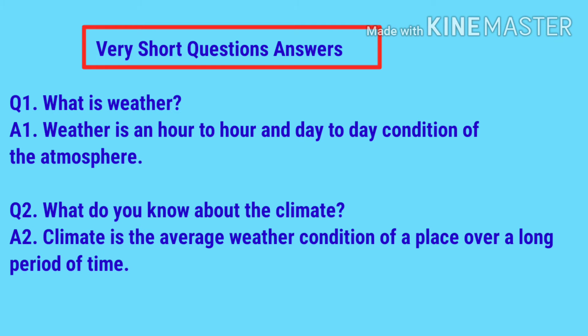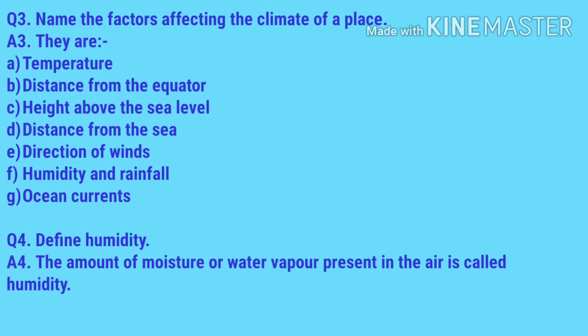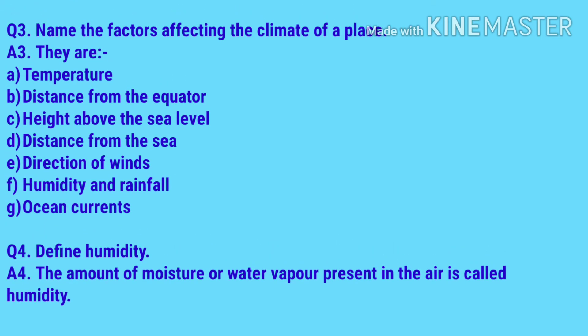Question number two: what do you know about climate? Climate is the average weather condition of a place over a long period of time. Question number three: name the factors affecting the climate of a place. The factors are temperature, distance from the equator, height above sea level, distance from the sea, direction of winds, humidity and rainfall, and ocean currents. Question number four: define humidity. The amount of moisture or water vapor present in the air is called humidity.